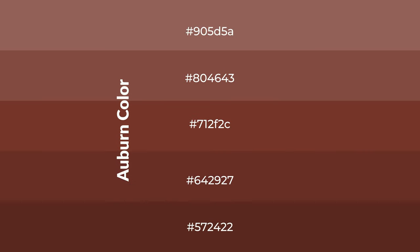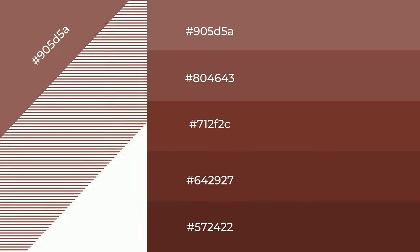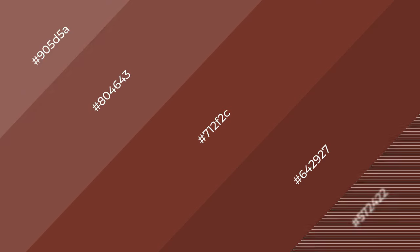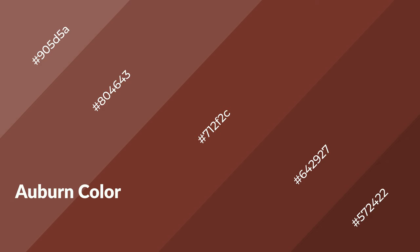To generate shades of a color, we add black to the color, and it is used in patterns and 3D effects. Layers and shades create depth and drama. Auburn is a warm color and it emits cozier and active emotions.